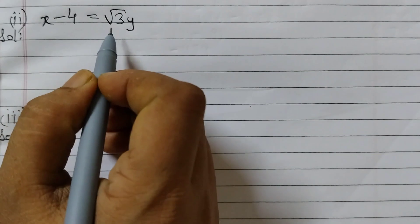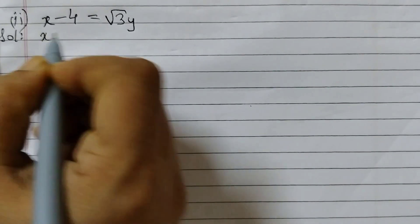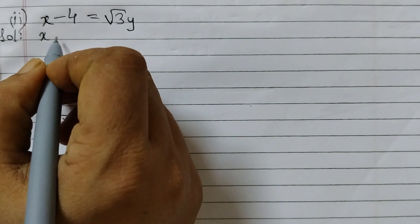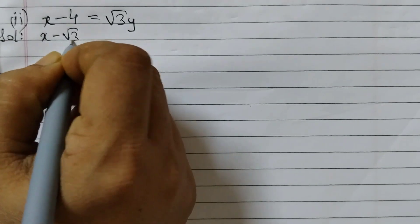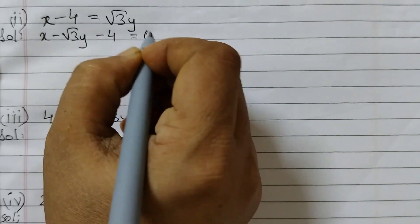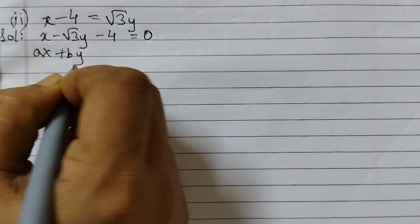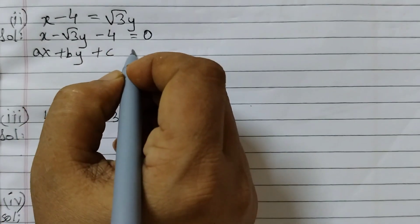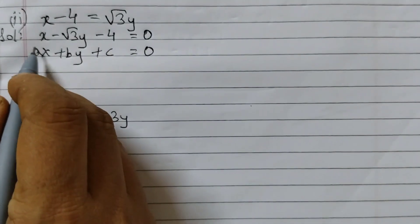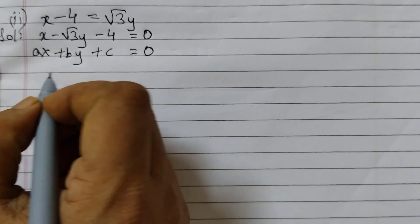Now the next one, x minus 4 is equal to square root of 3y. So x, get this term to the left hand side, minus root 3y minus 4 is equal to 0. So this is ax plus by plus c equal to 0. This is just for comparison I am writing, you don't need to write like this, just to compare.